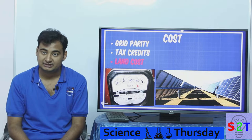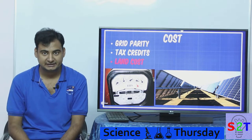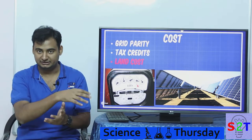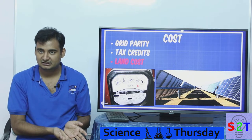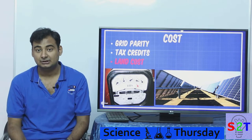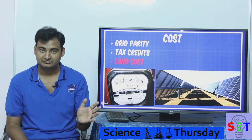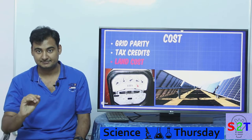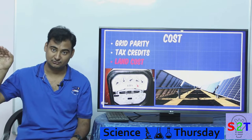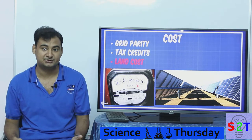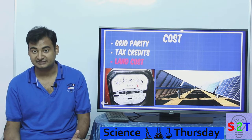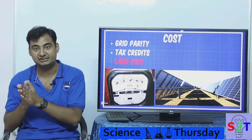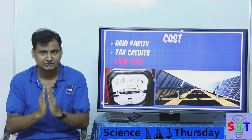Coal is a depleting resource — sooner or later a mine runs out. Petroleum-based power plants have seen their cost per kilowatt-hour rising steadily. Solar, on the other hand, is going down in cost because of advancements in technology, inverters, and maximum power point tracking. However, the two curves haven't crossed yet — solar hasn't become cheaper than coal everywhere, but we're almost there.